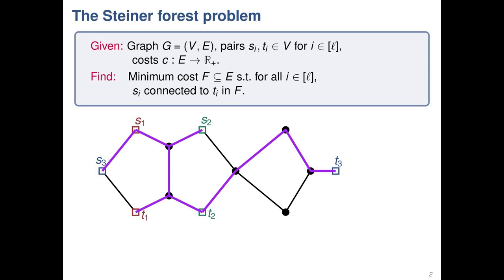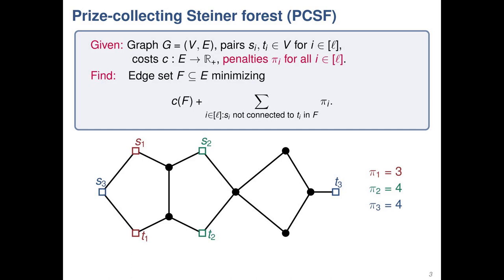That's Steiner forest, and if all the T_i's are the same, this would be Steiner tree. The prize-collecting version is the same thing, except you have the option of not connecting all of the terminals. You can instead pay some penalty π_i for not connecting pair i. So the prize that we win is not having to pay that penalty. For example, we might not connect S3 and T3. And PCST will be prize-collecting Steiner tree — same thing, but all the terminals share a common root.